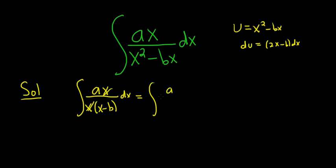You just get a over x minus b dx. So to do this integral, all we have to do is make a U substitution. We'll let U be equal to x minus b.